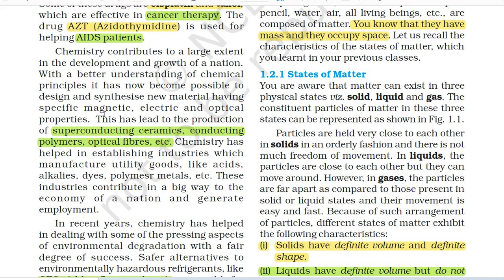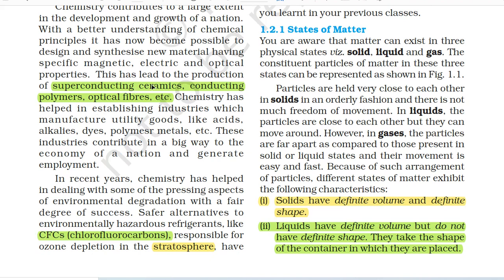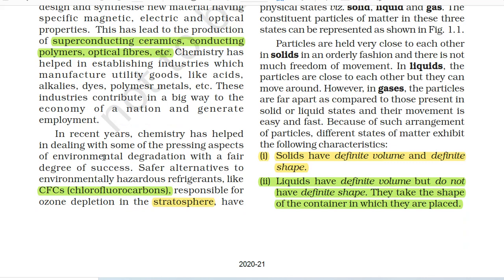Chemistry contributes to a large extent in the development and growth of a nation. With a better understanding of chemical principles, it has now become possible to design and synthesize new materials having specific magnetic, electric and optical properties. This has led to the production of superconducting ceramics, conducting polymers, optical fibers, etc. Chemistry has helped in establishing industries which manufacture utility goods like acids, alkalis, dyes, polymers, metals, etc. These industries contribute in a big way to the economy of a nation and generate employment.